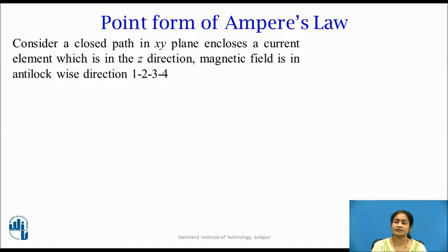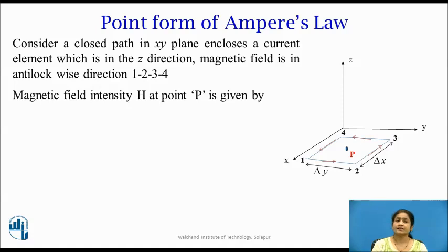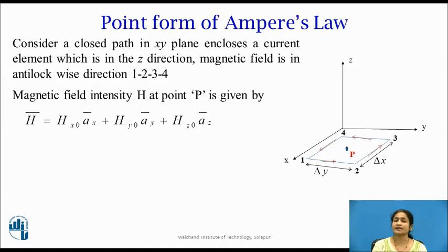The magnetic field is shown in an anti-clockwise direction according to the right-hand thumb rule. We will consider an xyz Cartesian coordinate system with the path lying in the xy-plane, with length changes dx and dy. We will consider a point P where we desire to find the magnetic field intensity.